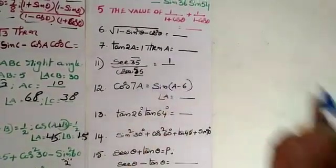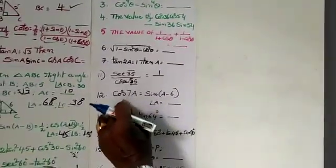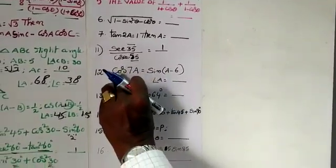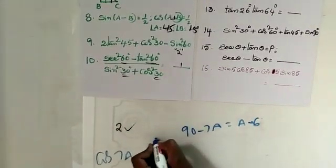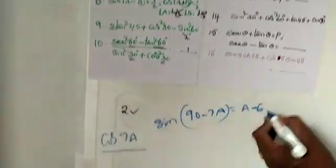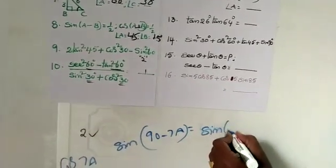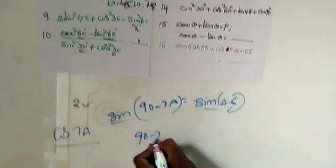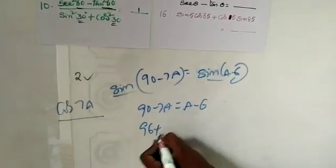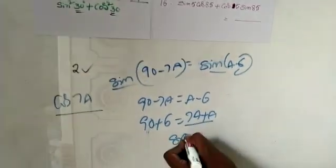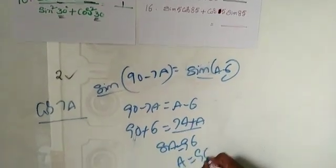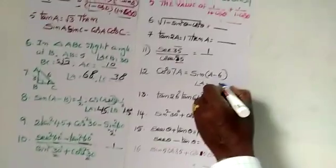For example, cos 7A and sin of A minus 16 - up to 10th class syllabus, write 90 minus A. So sin(90 minus 7A) gives cos, and here 90 minus 7A is equal to A minus 6. This is the proof: 90 plus 6 is equal to 7A plus A, so 8A equals 96, and A equals 96 divided by 8, which gives 12 degrees.